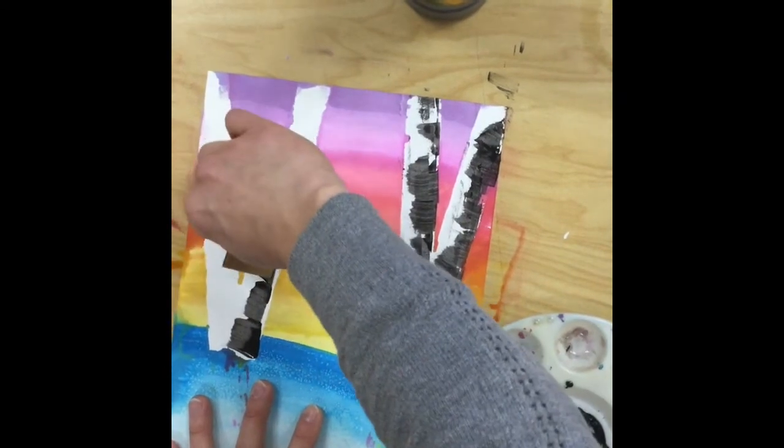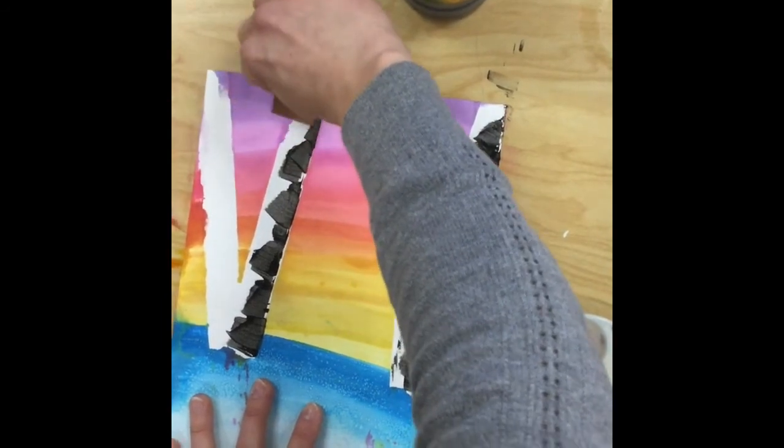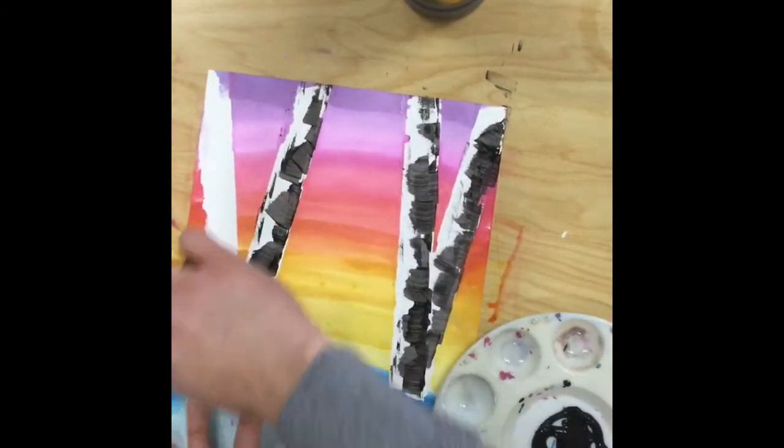Now I'll do it again on the other two of my trees, swiping from one side of the tree across to the other, leaving some of the white.